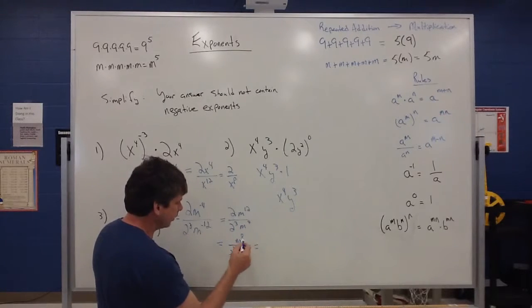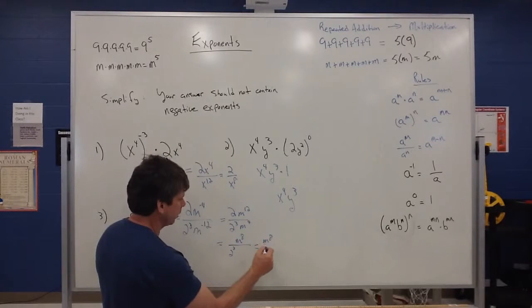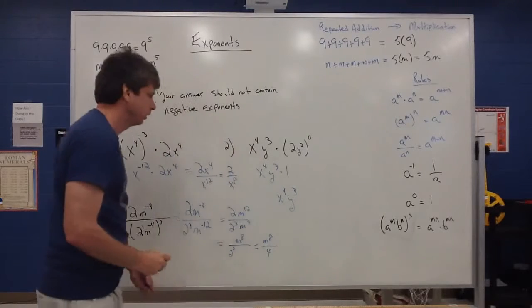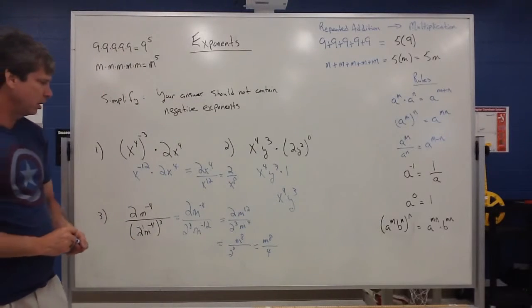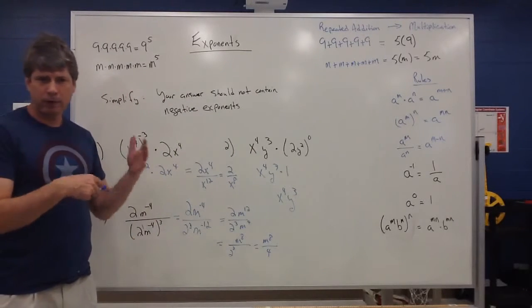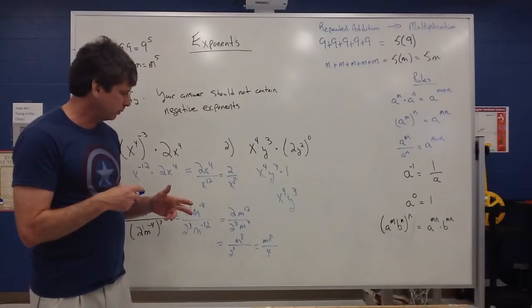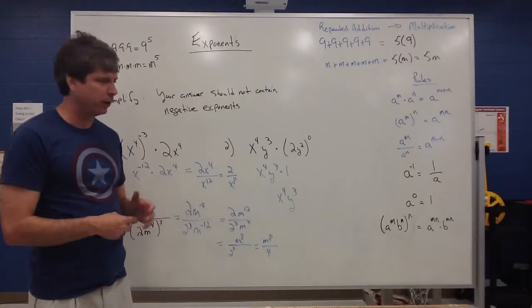Now remember 2 squared is the same thing as 4 so I can write that as m to the 8th over 4. That would be my simplified answer in that example. So there are some nuances to this to kind of play with and it just kind of takes practice in going through examples to get more familiar with that.